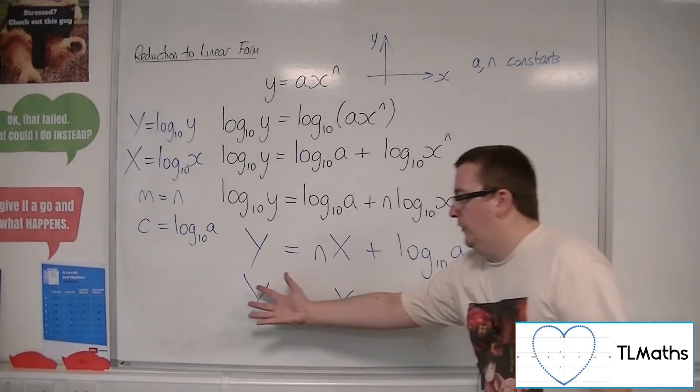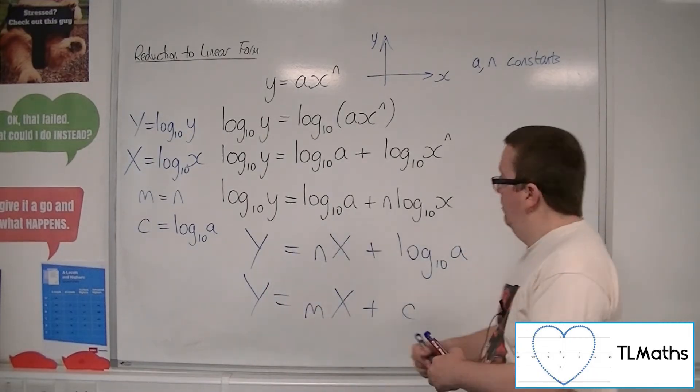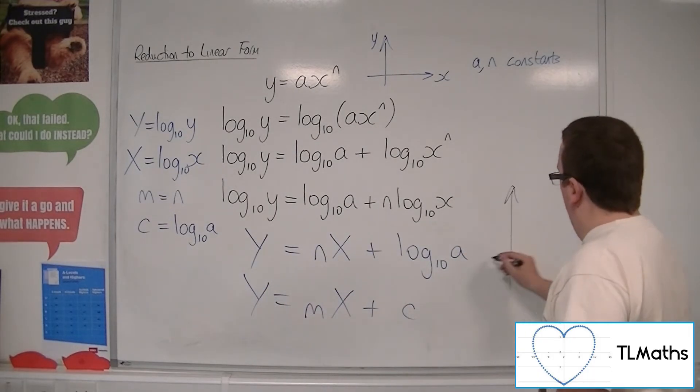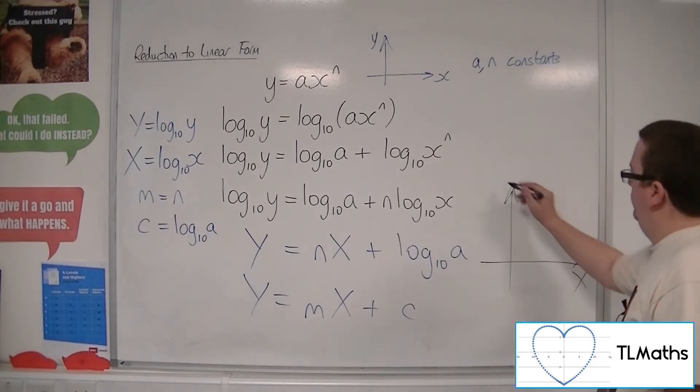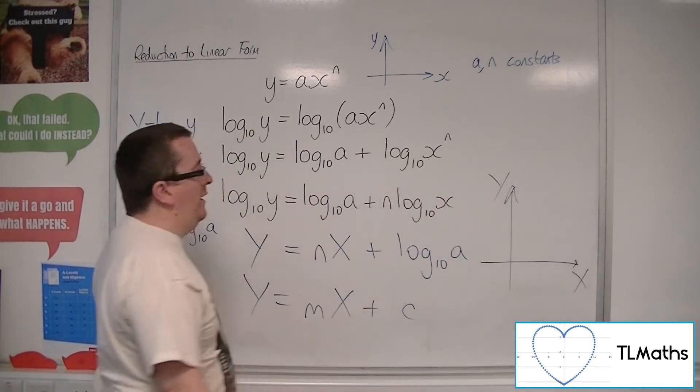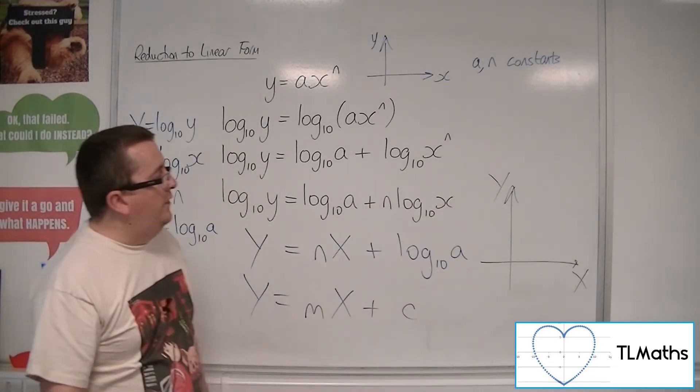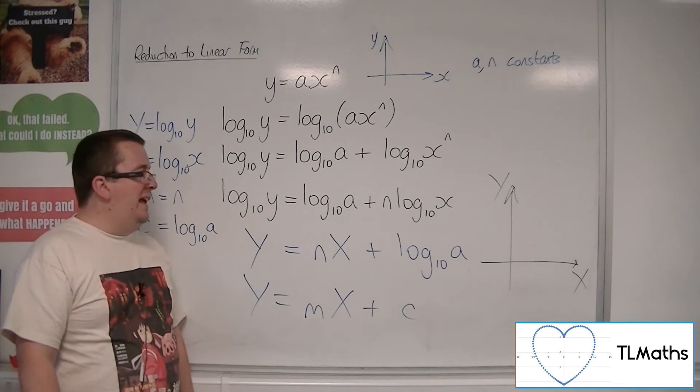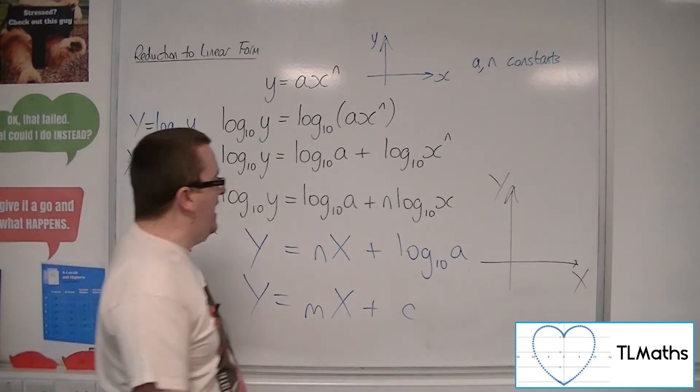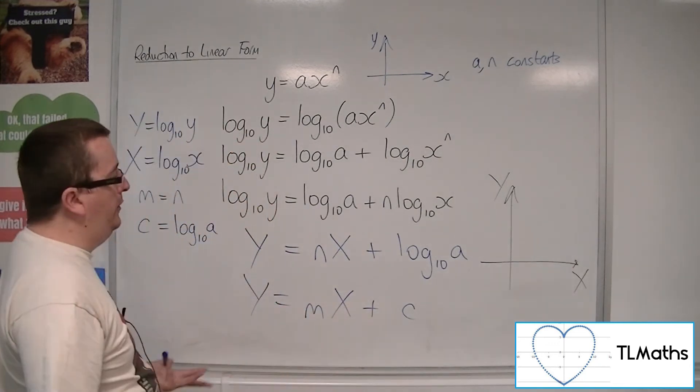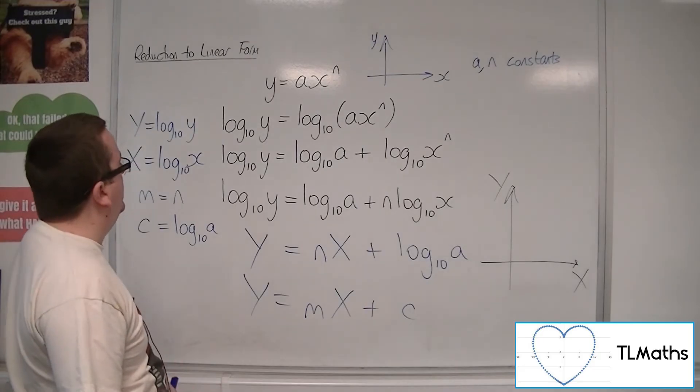And this is a straight line equation for a new set of data points where X is the horizontal axis. Capital X is the horizontal axis. And capital Y is the vertical axis. Now, if I'd gone through this process, and now if I'd plot the new points based on that...